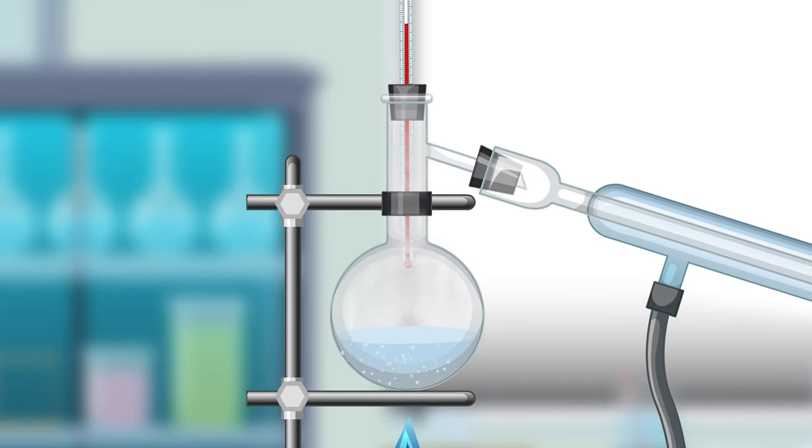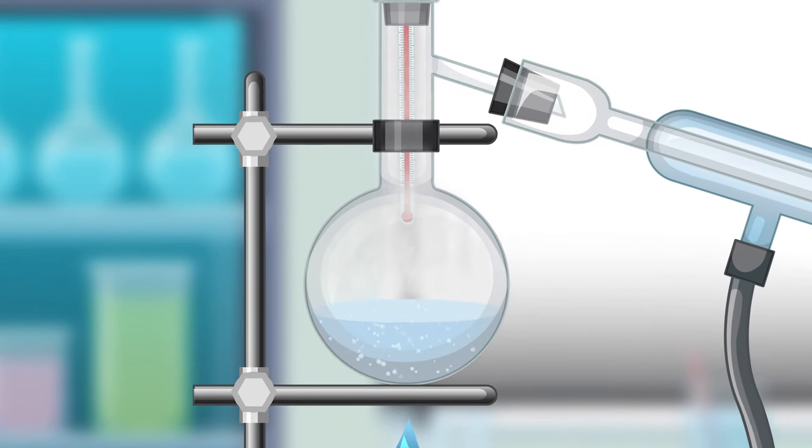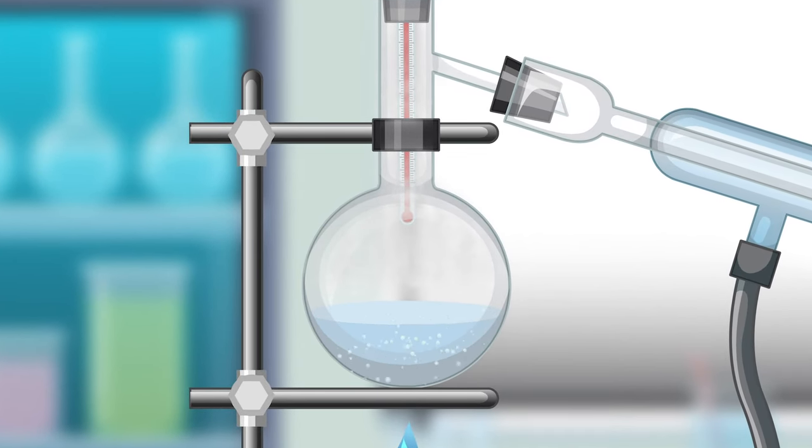Step 4. Vaporization. As the substance is heated, it begins to evaporate and boil, causing vapor to rise from the liquid in the distillation flask.